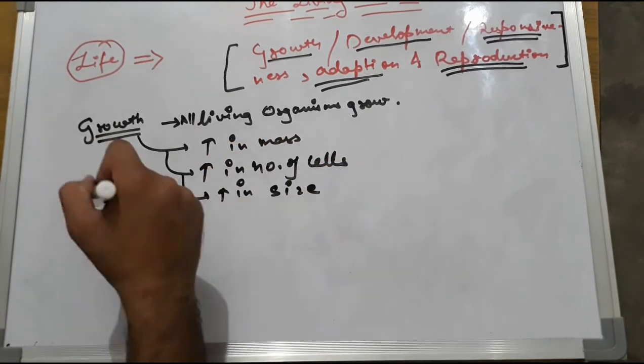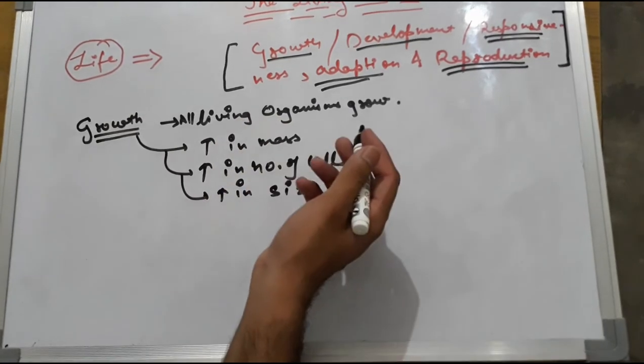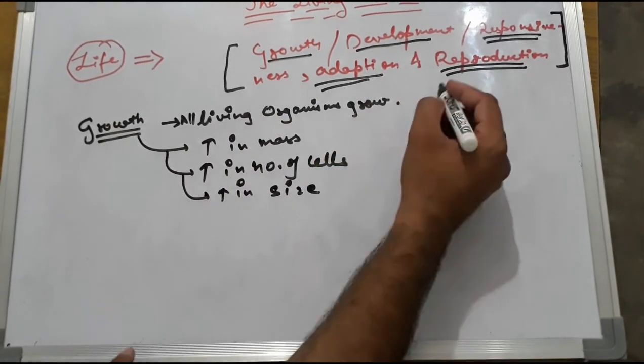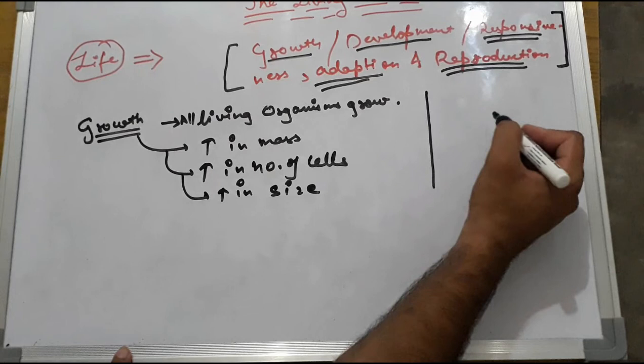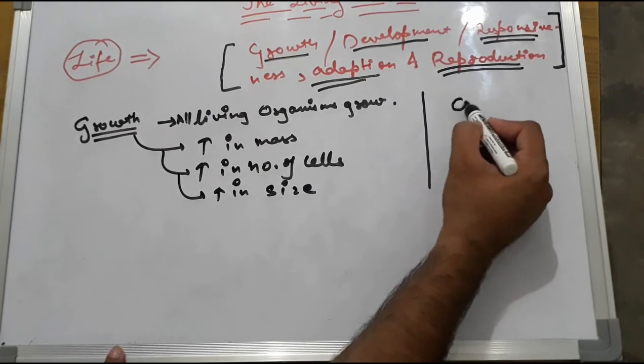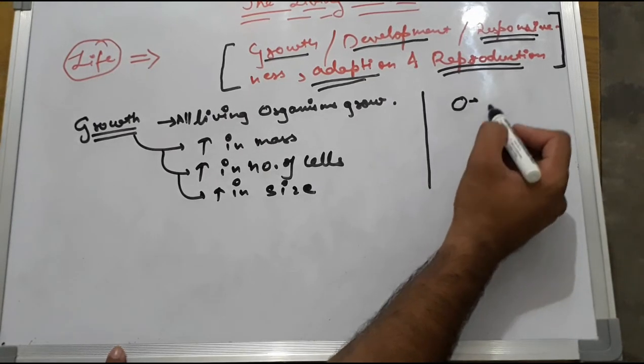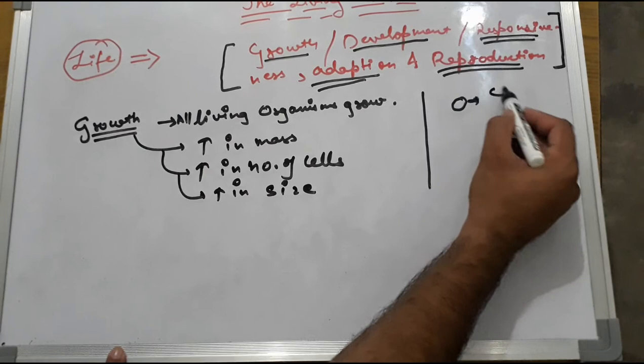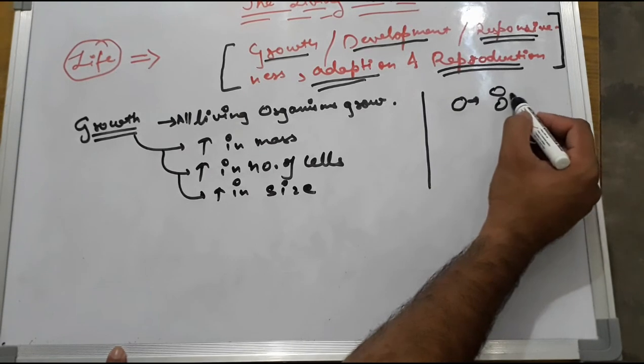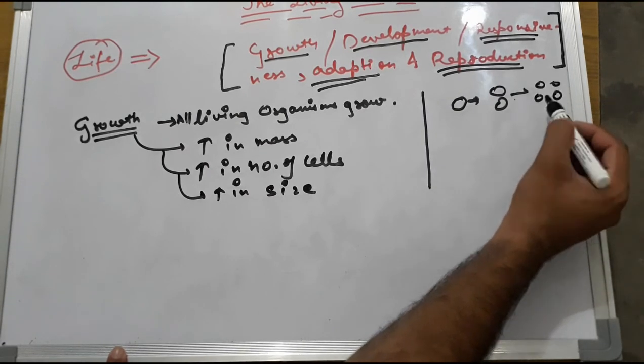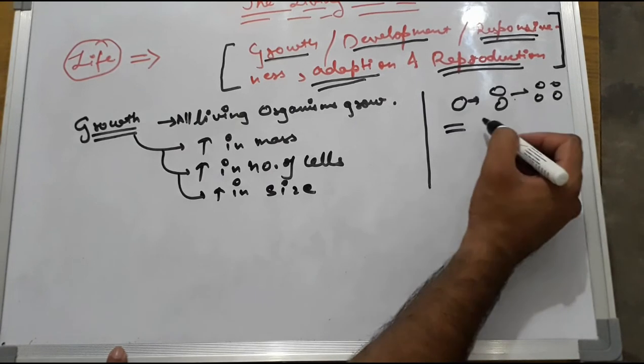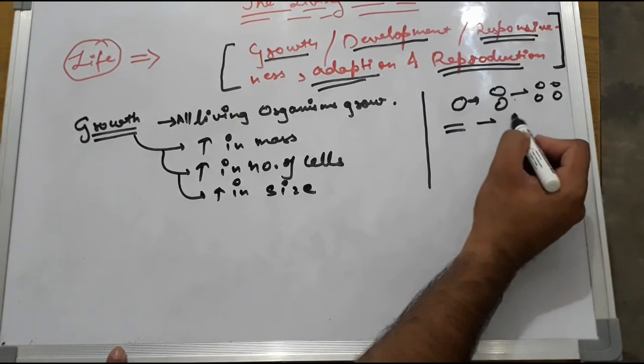If we can say growth, how can we say growth? If we can see there is a normal organism with a single cell, if it can divide or form, that is growth. The number of cells is increasing.